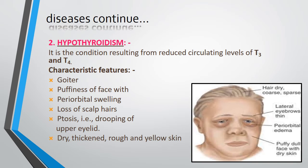The second disease condition is hypothyroidism — a condition resulting from reduced circulating levels of T3 and T4. Characteristic features include goiter, puffiness of face, periorbital swelling, loss of scalp hair, ptosis (drooping of the upper eyelid), and dry, thickened, rough, and yellow skin.